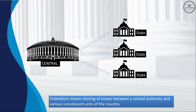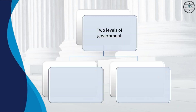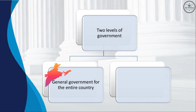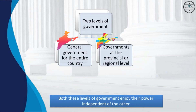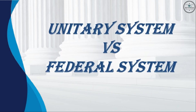Federalism means sharing of power between a central authority and various constituent units of the country. A federation has two levels of government: a general government for the entire country and governments at the provincial or regional level. Both these levels of government enjoy their power independent of the other.